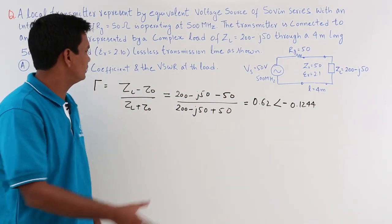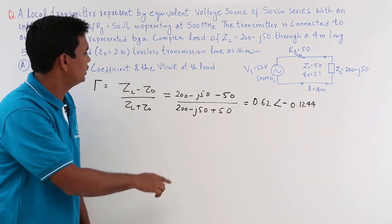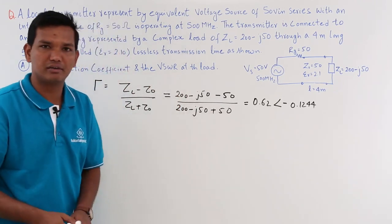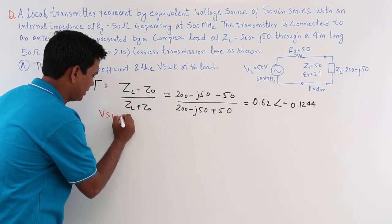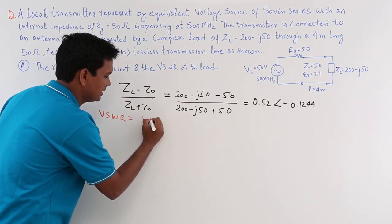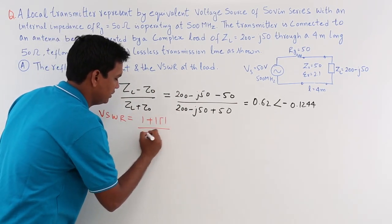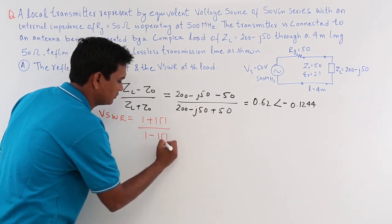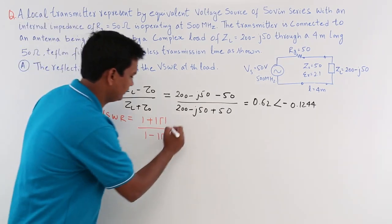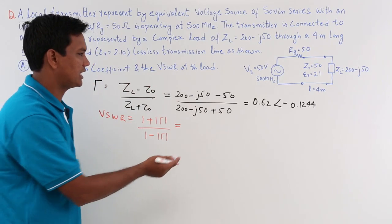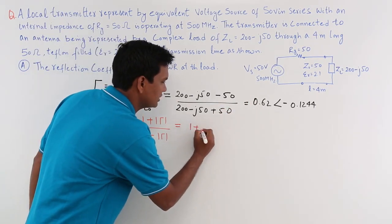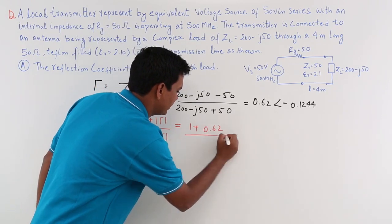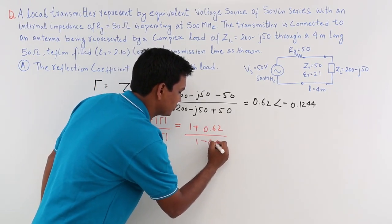The second part of the question says you have to find the VSWR at the load. We know that VSWR is 1 plus mod τ divided by 1 minus mod τ. Substituting the values, since we already have τ, it is 1 plus 0.62 divided by 1 minus 0.62.